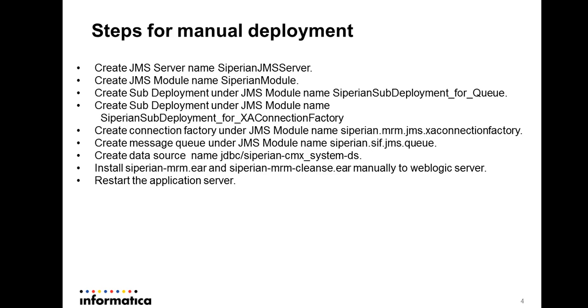You need to create the JMS server, name server, Syberian JMS server, JMS module, cyber module, sub deployment, connection factory, and data sources. Then you need to deploy the EAR files. At last you need to restart the application server in order for these changes to take effect.